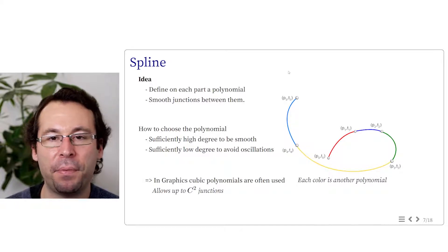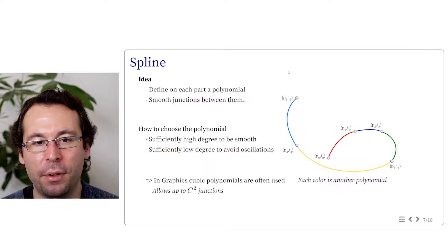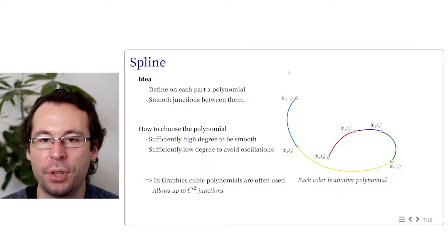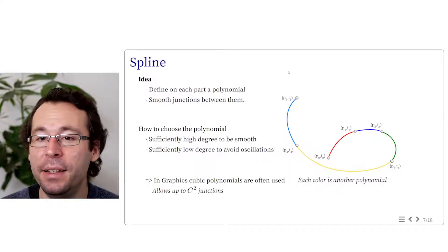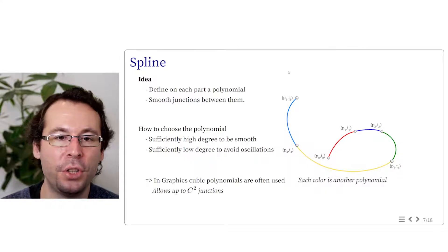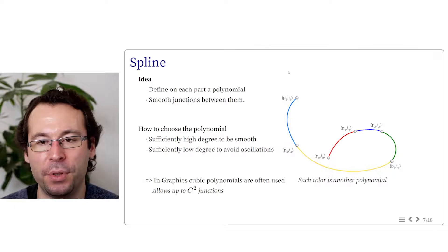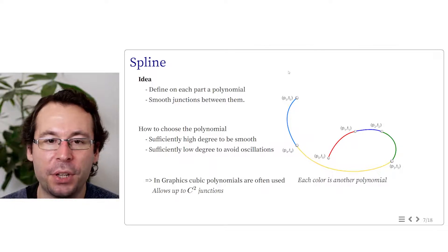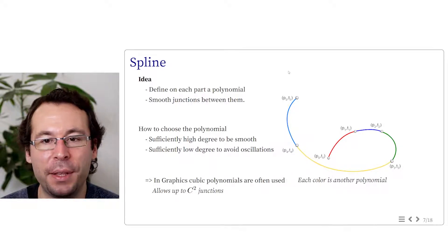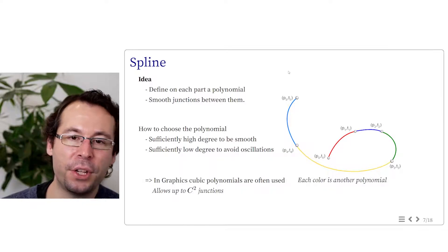In graphics, we often use cubic polynomials. They allow sufficiently smooth curves. We can hope for C2 junctions, but they provide easily C1 junctions, which is often good enough for animation purposes. And they remain sufficiently easy and efficient to manipulate.